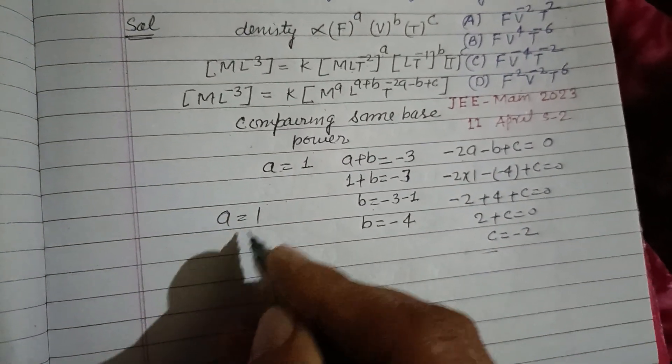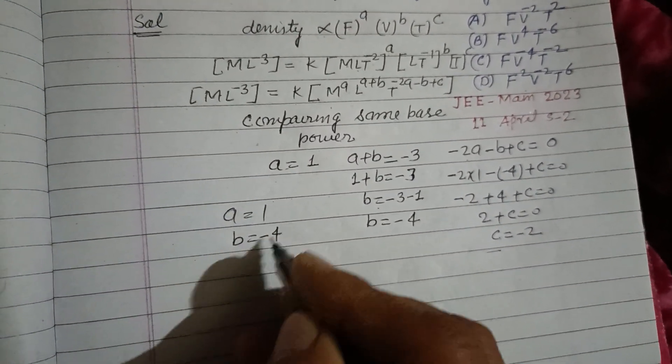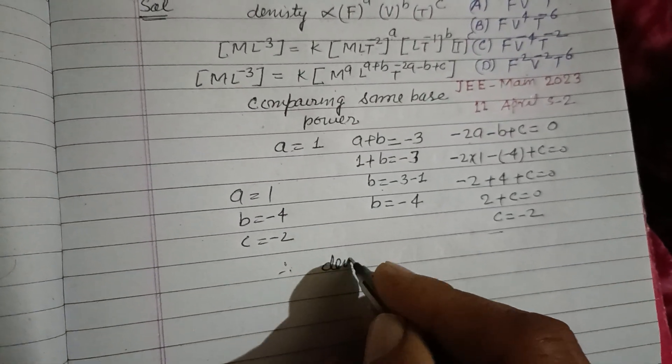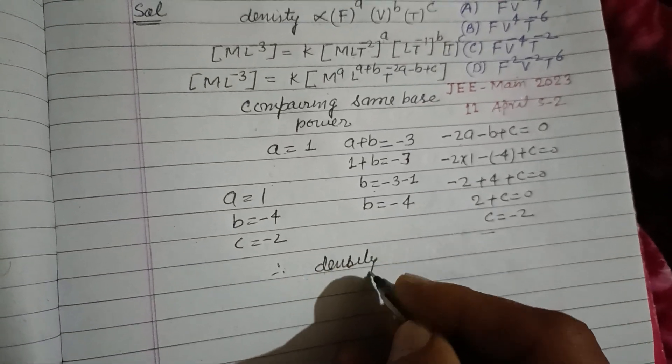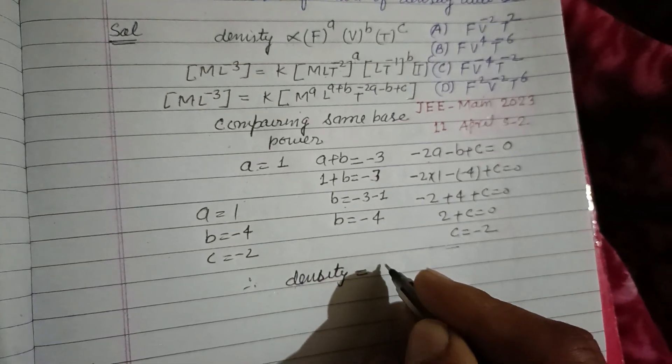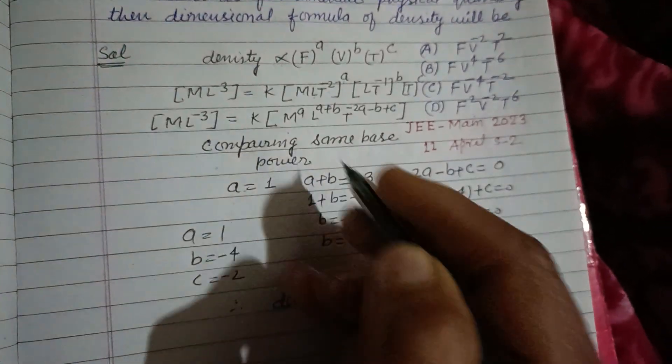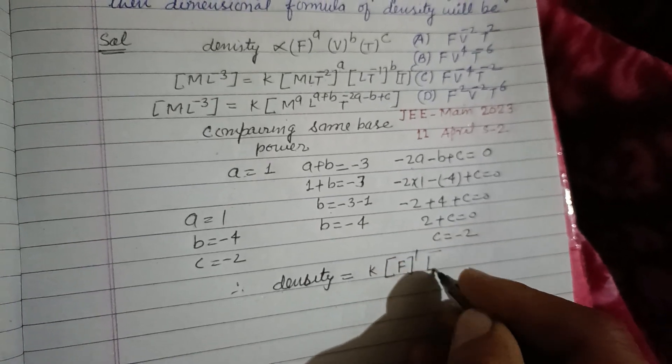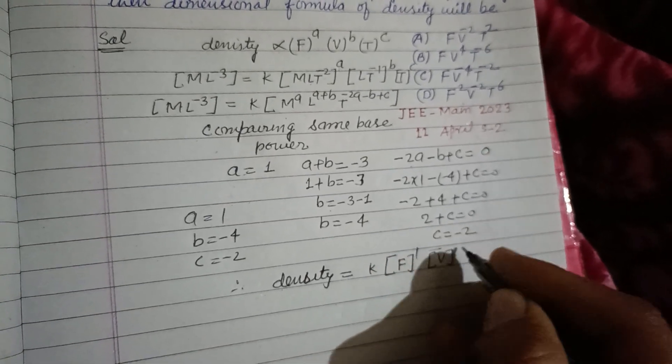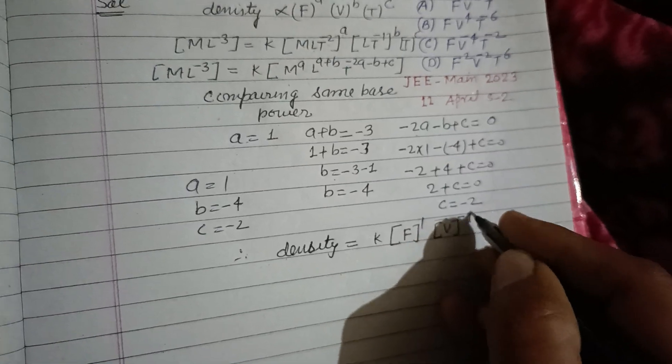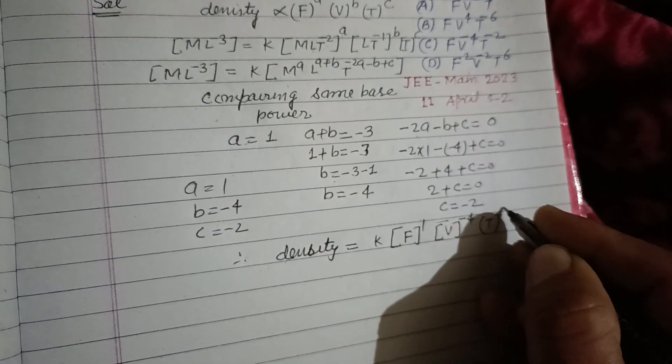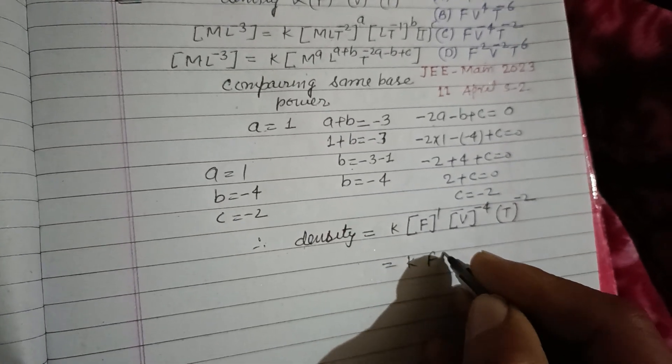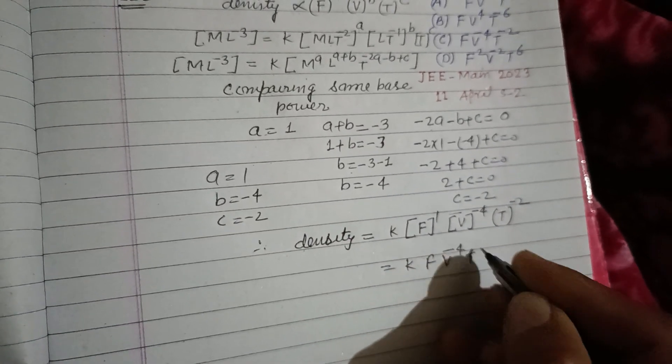So here A is 1, B is minus 4, C is minus 2. So this will be K times F V^-4 T^-2.